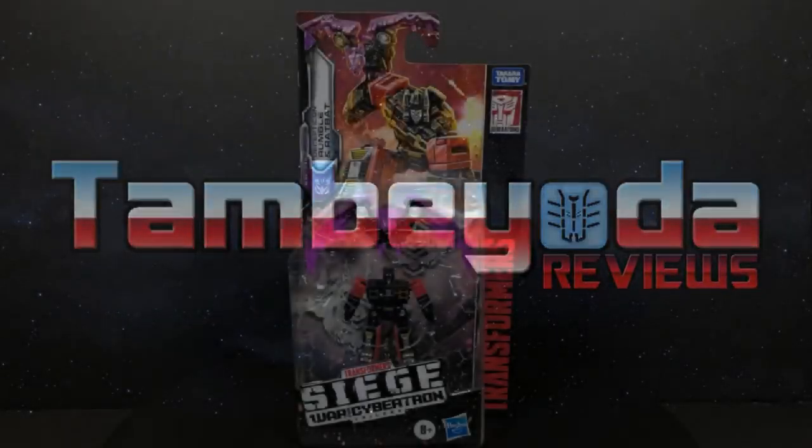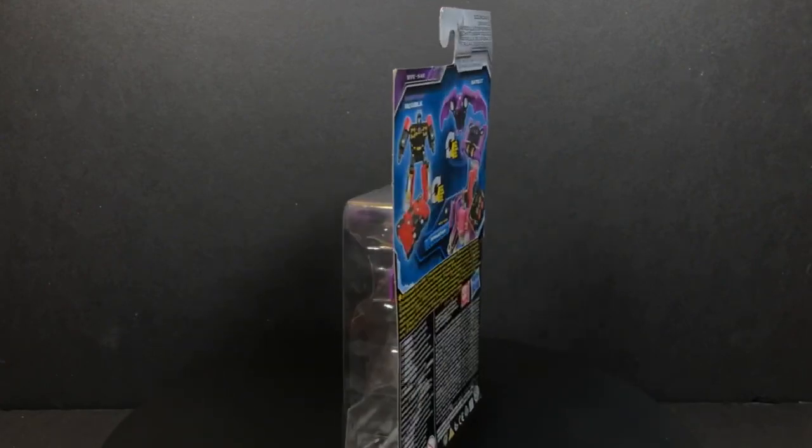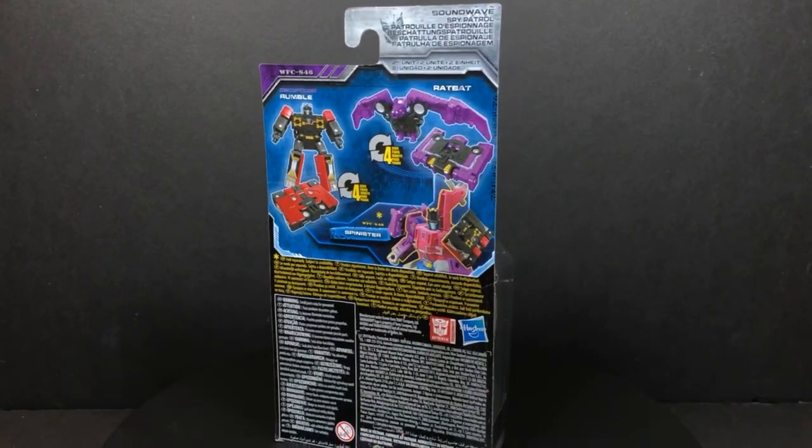Everybody, this is Tambiota. Today we're going to be taking a look at War for Cybertron Siege Micro Masters Rumble and Rat Bat. As you can see, this is them in their packaging. Let's go ahead and take them out and check them out right now.